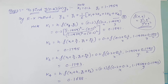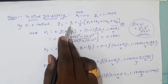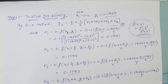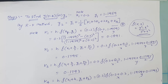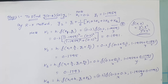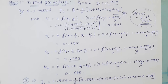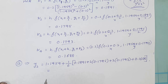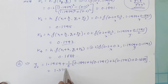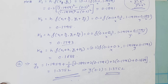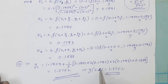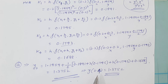Now substitute all values into equation B. y₂ = y₁ + (1/6)(k₁ + 2k₂ + 2k₃ + k₄) = 1.1959 + (1/6)(0.1891 + 2×0.1795 + 2×0.1793 + 0.1688). Using a scientific calculator, y₂ = 1.3752. So y(0.4) = 1.3752. In this way, we can easily find out the values of y(0.2) and y(0.4). Thank you.